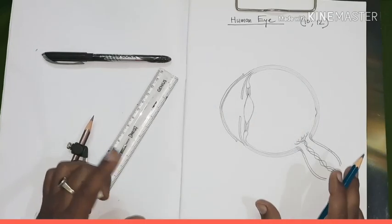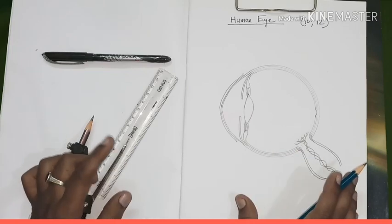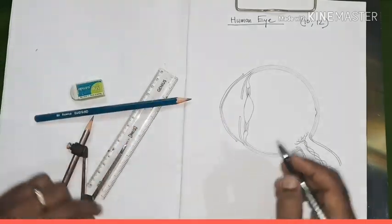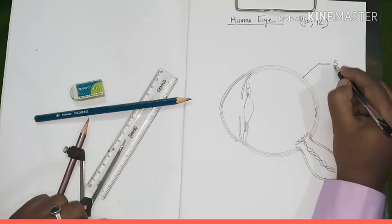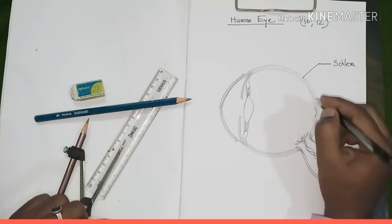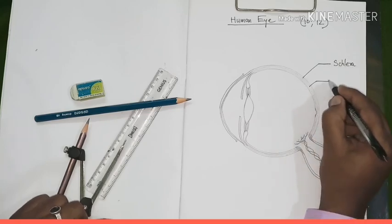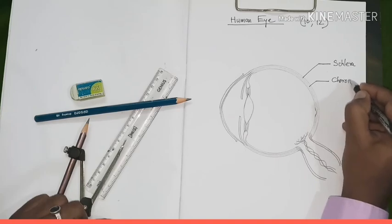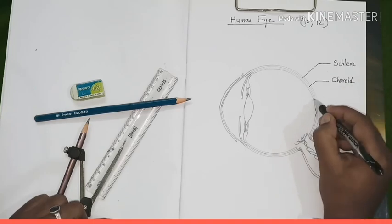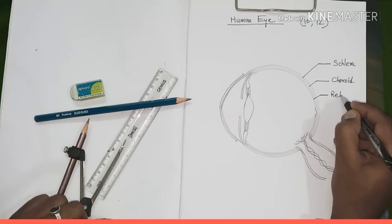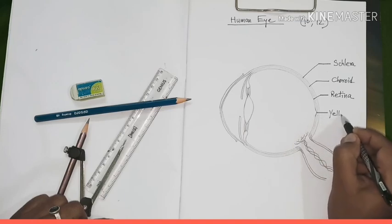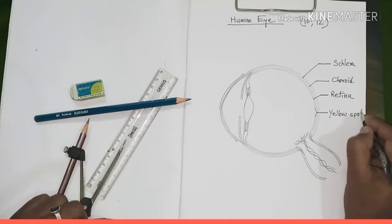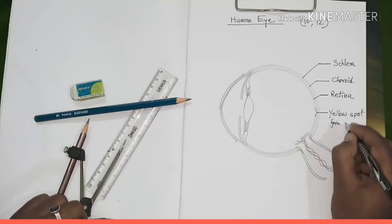Now, our entire diagram is almost done. We have to point out the diagram. The outer most layer at the back side of the eye is known as sclera. The second lining is known as choroid. The third one, the most light sensitive portion of our eye is known as retina. The concave region is known as yellow spot or otherwise known as fovea centralis.